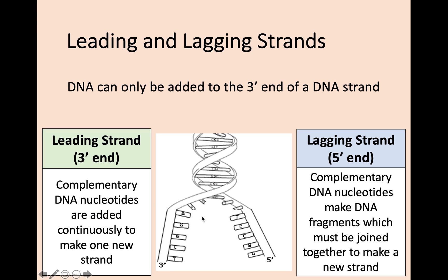There are two main terms we're going to look at during DNA replication. You might remember from Key Area 1 that DNA can only be added to the 3' end. The strand with the 3' end is called the leading strand, because complementary DNA nucleotides can be added continuously to this 3' end to make a new strand of DNA — it goes continuously, almost like a zipper going up a jacket.